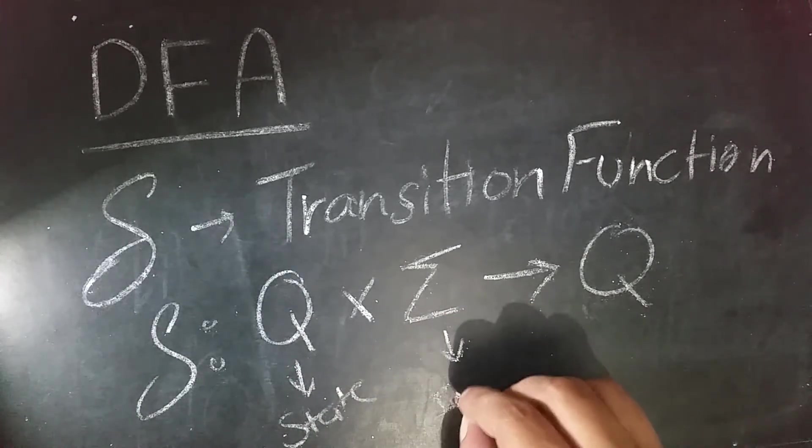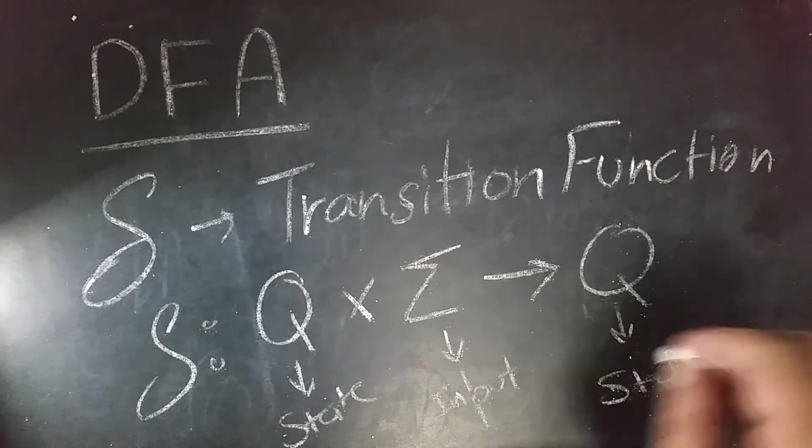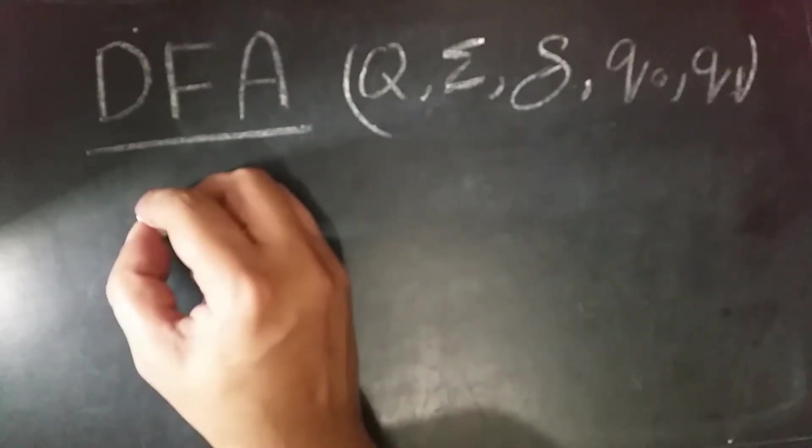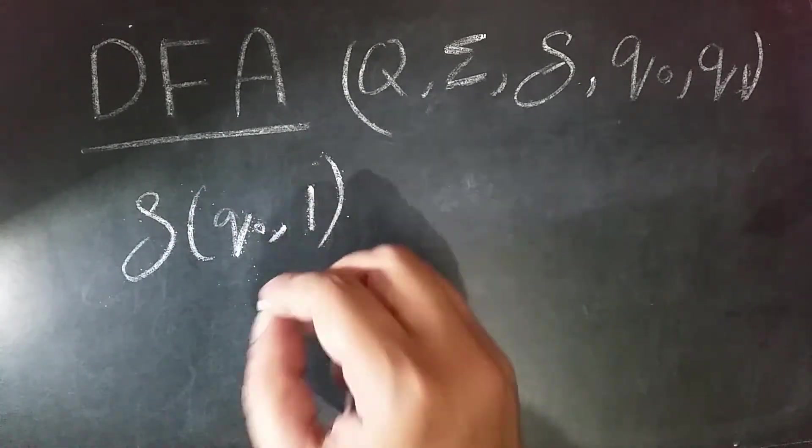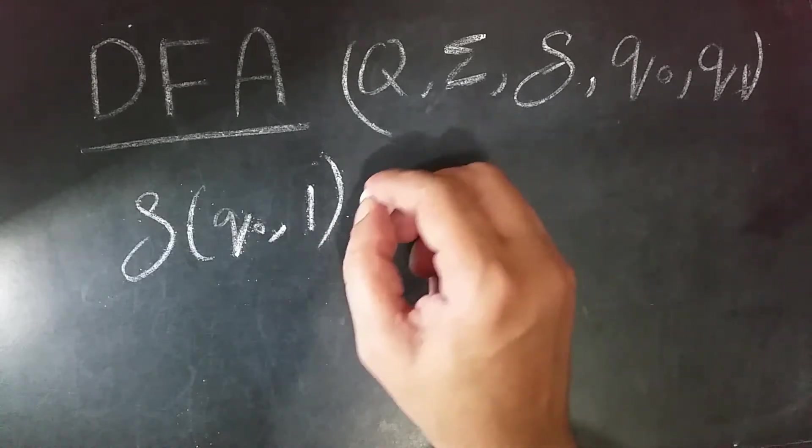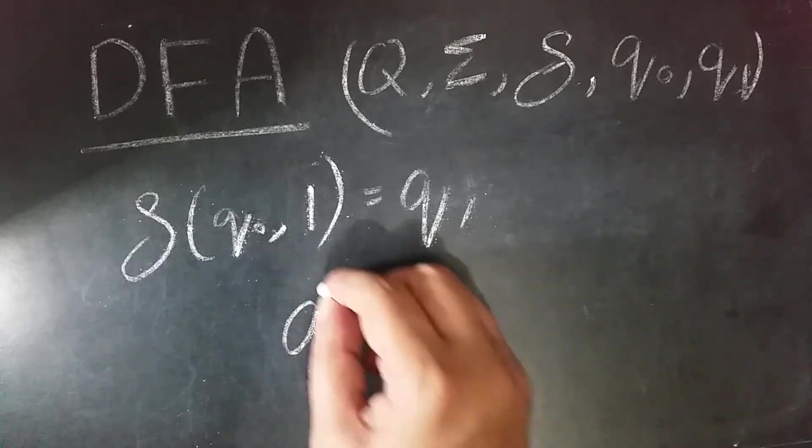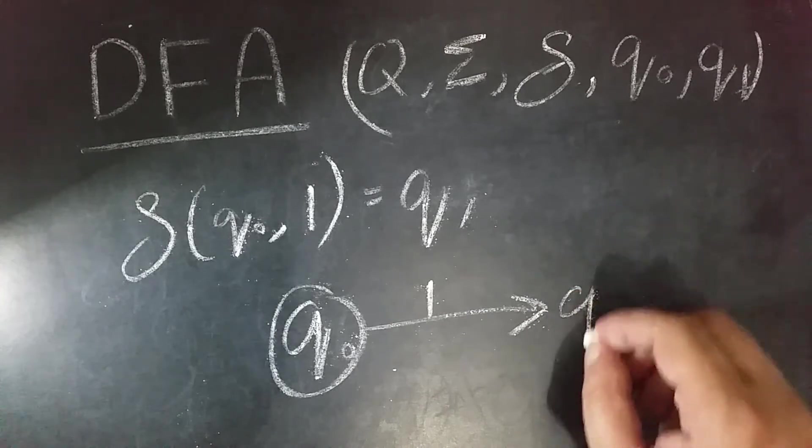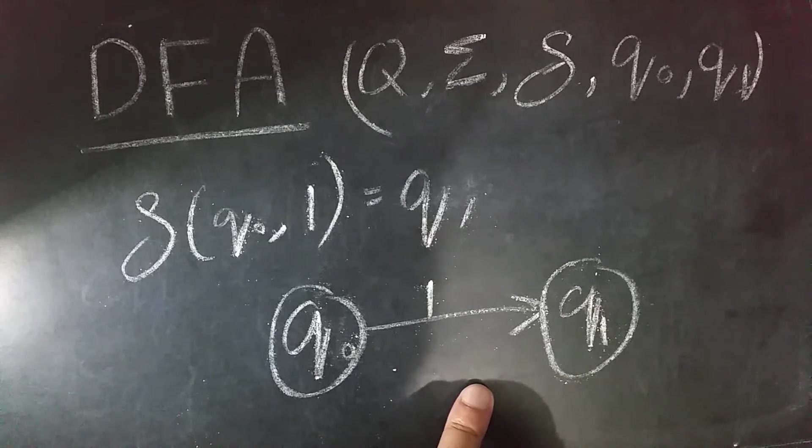will give an input which will take us to a new state. Now, if I were to give an example: say delta on Q0, if the input is 1, then that will take us to Q1. We can draw it as Q0 with input 1 taking us to Q1. Since there is only one transition for one input, it is a DFA.